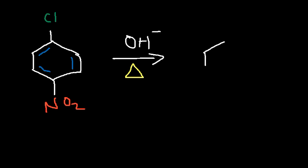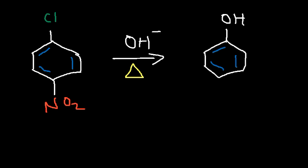To draw the product of this reaction, all you need to do is simply replace the chlorine atom with the nucleophile, in this case the hydroxyl group. So now we have para-nitrophenol, and that's the product.